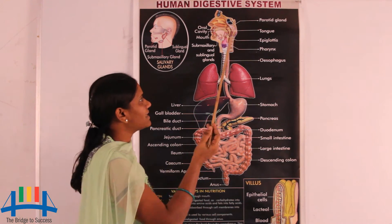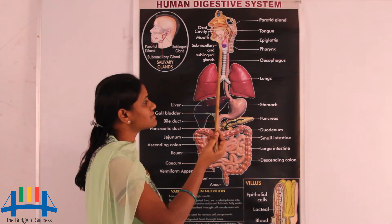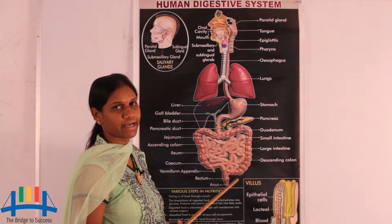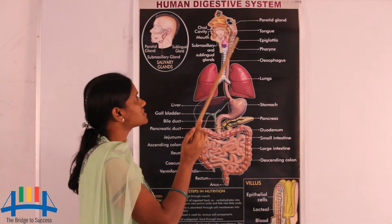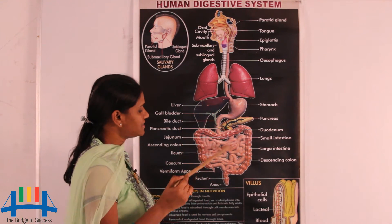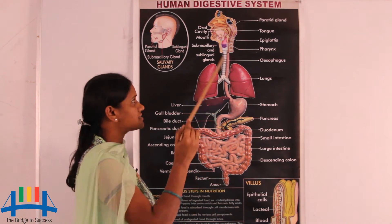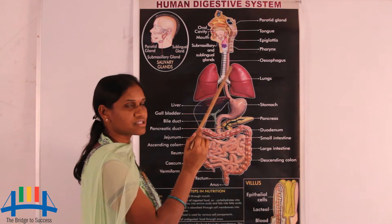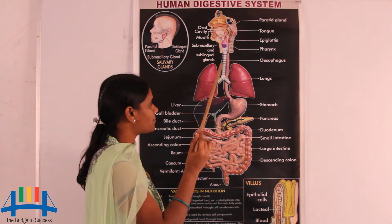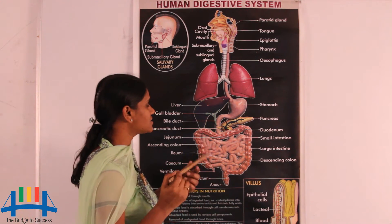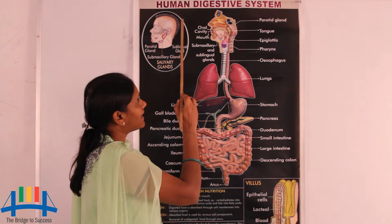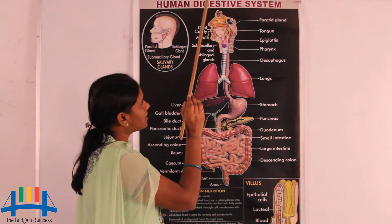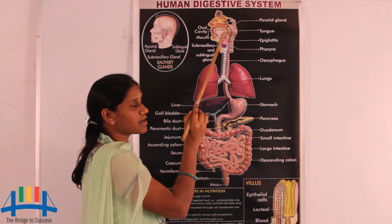The alimentary canal starts with the mouth and ends with the anus. All the parts present form a tube-like structure, and this entire tube-like structure is called the alimentary canal.